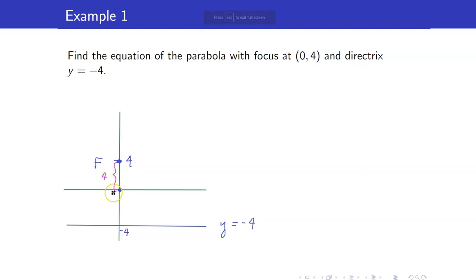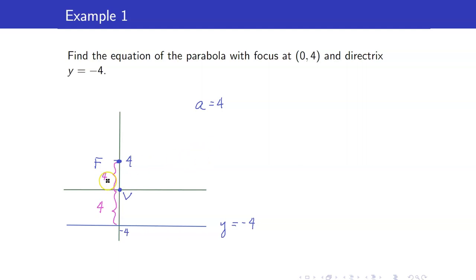This distance is equal to 4, and this distance is equal to 4 as well. What is this 4 over here? That is your a. Remember that the distance between the focus and the vertex is precisely equal to a. And since your directrix is y equals negative 4, your parabola is going up.